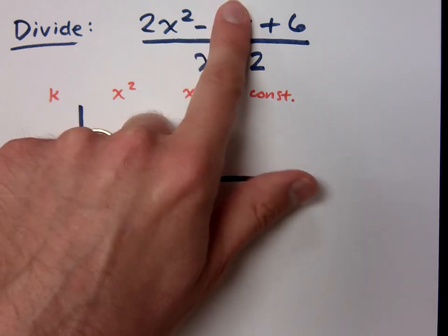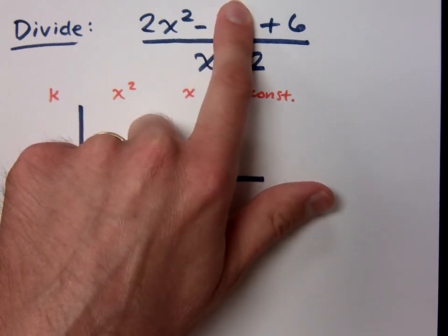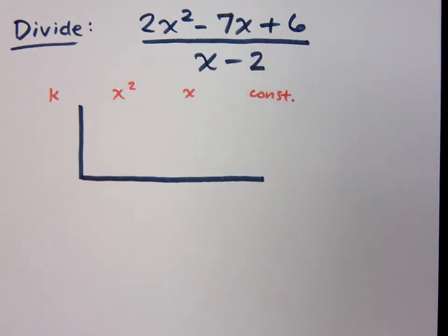So if there were no x term, what would its coefficient be? Zero. So you have to put in placeholders if somebody is missing. Is that cool? Yes.